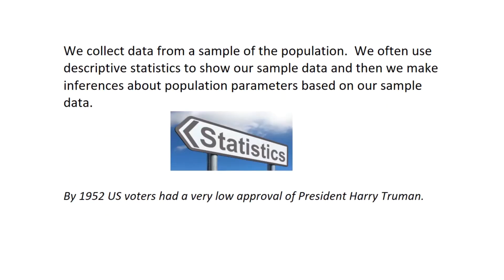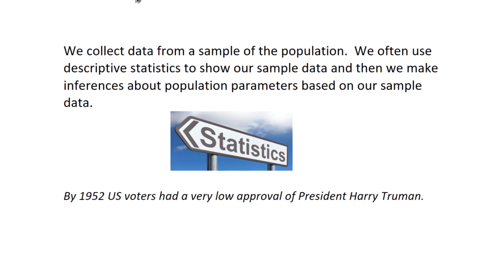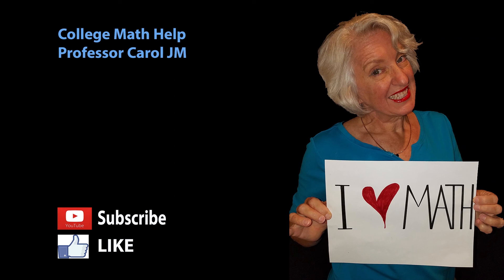In summary, we collect data from a sample of the population, and we do that carefully. If we're satisfied that our sample is representative of the population — and we often make that decision by looking at probability — we use descriptive statistics to describe and show our sample data, and then we can make inferences about the population parameters we're interested in. From the examples we've looked at, we might say that by 1952, a great majority of US voters had a very low approval of President Harry Truman, about 78% disapproval at its lowest. Thank you for having me.